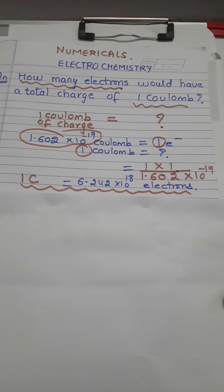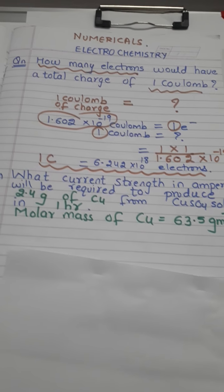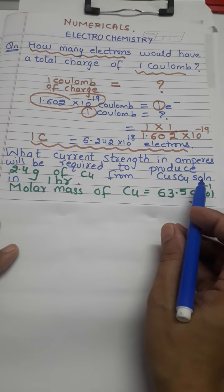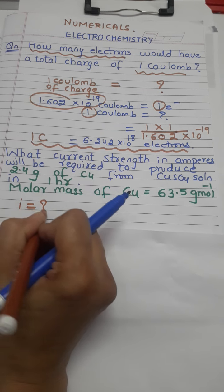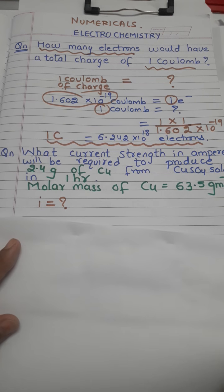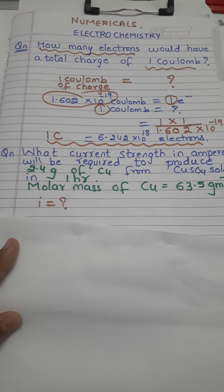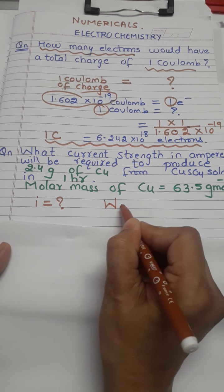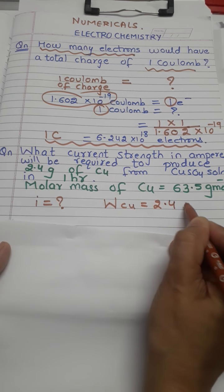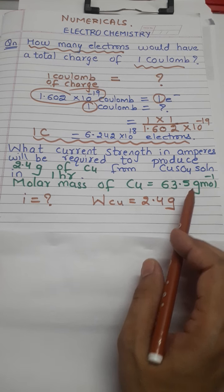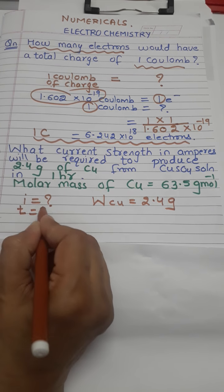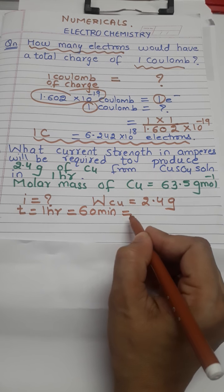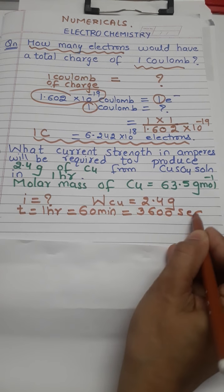This was the first numerical. Now we move to the next numerical. It is written here: what current strength in amperes will be required to produce 2.4 grams of copper from copper sulfate solution in 1 hour? The mass of copper given is 2.4 grams and time is 1 hour, which we convert to 3600 seconds.